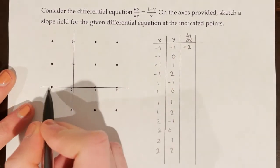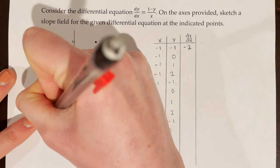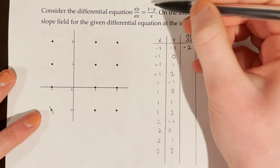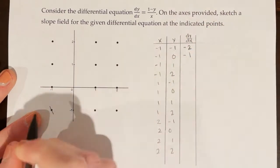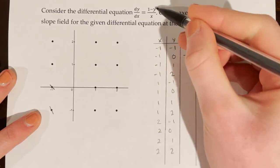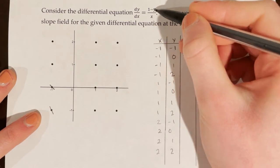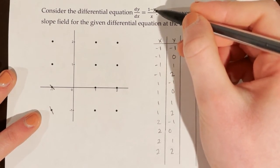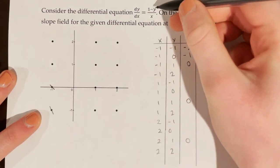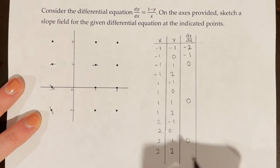We go to the point (-1, -1) on the graph and sketch a slope of approximately -2 — a tiny tangent line, a little steeper than -1. For (-1, 0): (1 - 0) / (-1) = -1, so slope is -1. For (-1, 1): (1 - 1) / (-1) = 0 / (-1) = 0. This shows a useful pattern — anytime y = 1, dy/dx = 0, because the numerator becomes zero. So at (-1, 1), (1, 1), and (2, 1), we draw horizontal tangent lines.